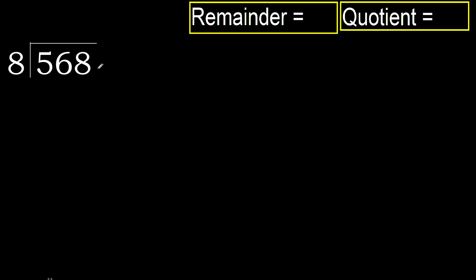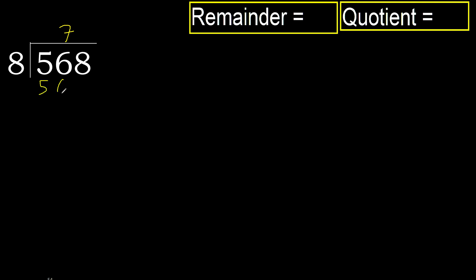568 divided by 8. 5 is less than 8, therefore next. 56 is not less, therefore with 56: 8 multiply by which number is nearest to 56 but not greater? 8 multiply by 8 is 64, which is greater. Multiply by 7: 56 is not greater, ok.